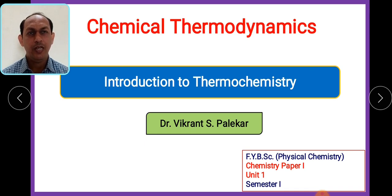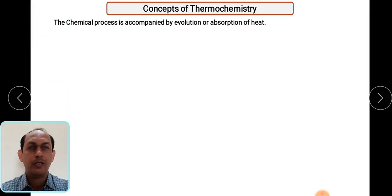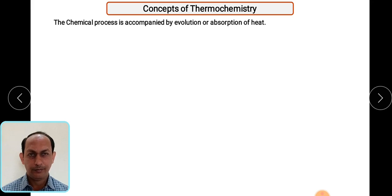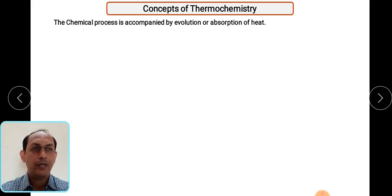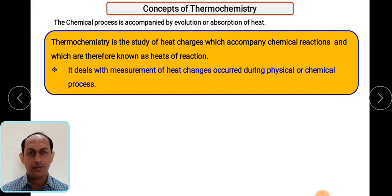In this particular session we are going to see the next important part of chemical thermodynamics, which is thermochemistry. As 'thermo' refers to heat changes accompanied with the chemical process, let us see what thermochemistry basically is. As we know, most chemical processes are accompanied with the evolution or absorption of heat. Based upon that we can also call a process an exothermic process or endothermic process.